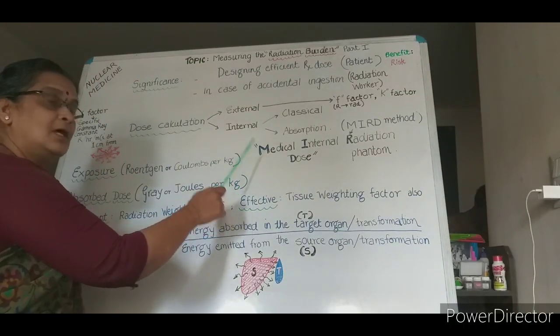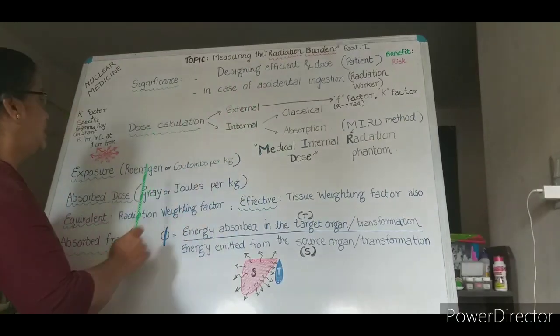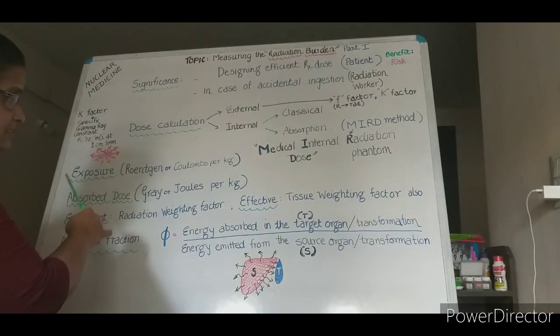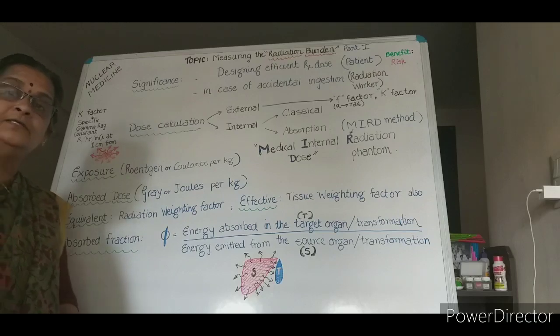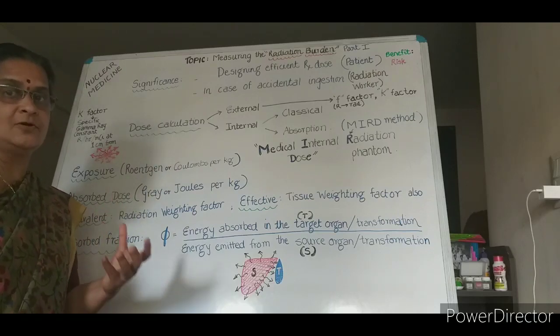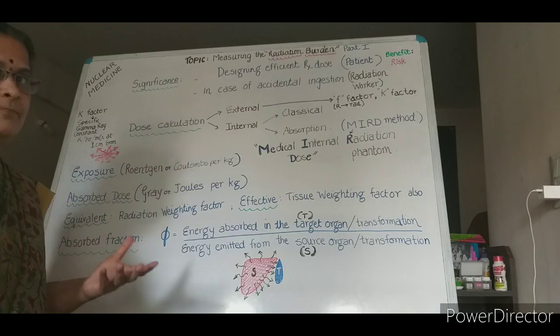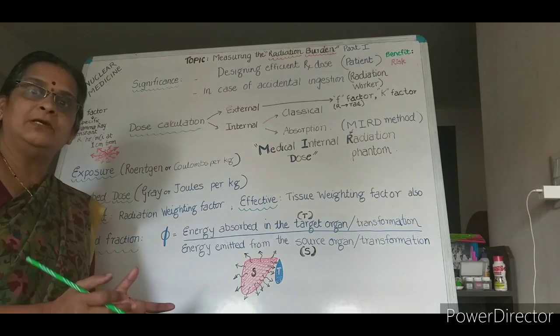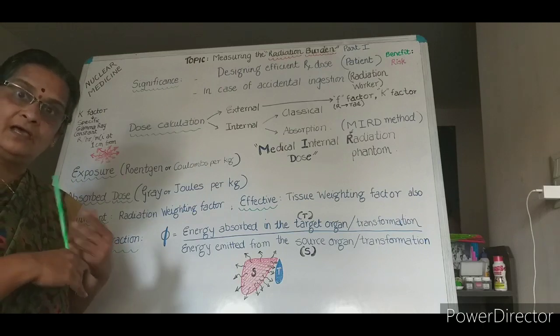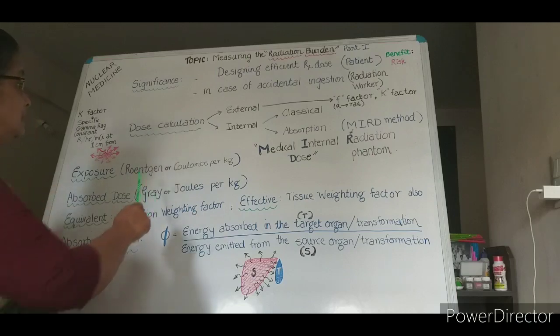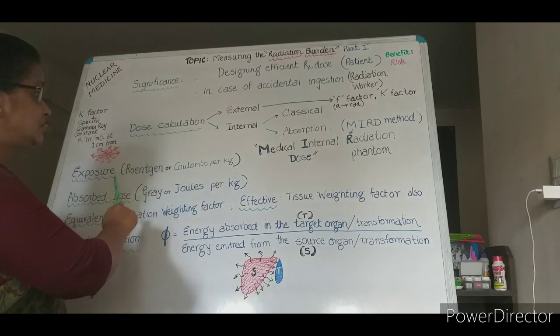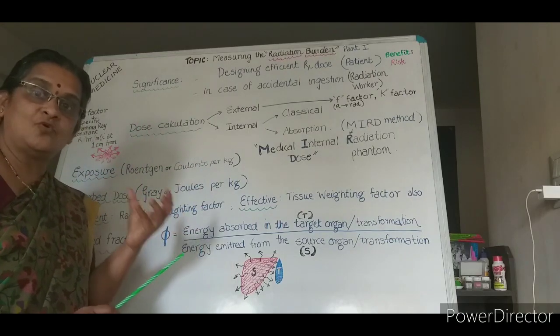Before going to this more in detail, which will be in part two, let us understand these concepts of exposure, absorbed dose, and absorbed fraction. Exposure is nothing but the extent of ionization or the number of ions produced in the air or surrounding medium of the radiation source once it is emitted. So this ionization extent is measured in the form of coulombs per kilogram. This is about the radiation source.